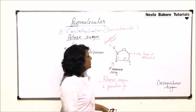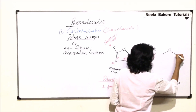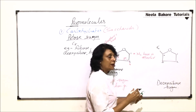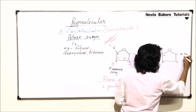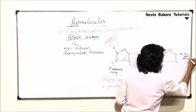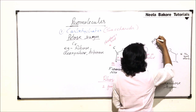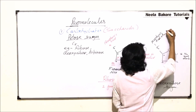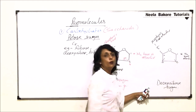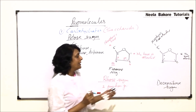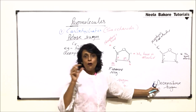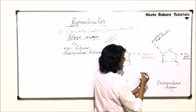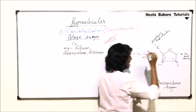Deoxyribose is also a pentose sugar, so its structure is the same five-carbon framework. Nitrogen base is attached at carbon one and phosphoric acid at carbon five. However, as the name 'deoxy' tells us, one oxygen has been removed: carbon two has H and H instead of OH and H, while carbon three still has OH and H.